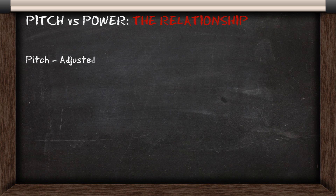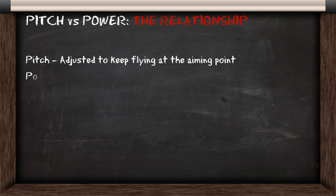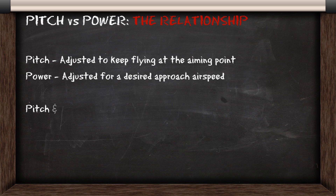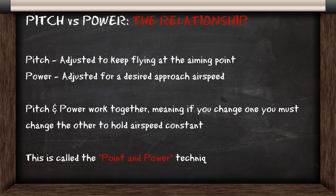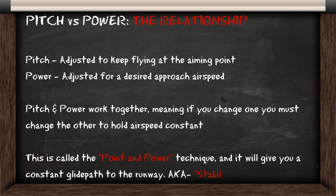Regarding pitch and power: pitch is always adjusted to keep flying at the aiming point, and power is adjusted for a desired airspeed. Pitch and power work together, so if you change one you must change the other in order to hold airspeed constant. This is called the point and power technique, and it will give you a constant glide path to the runway, also called a stabilized approach.